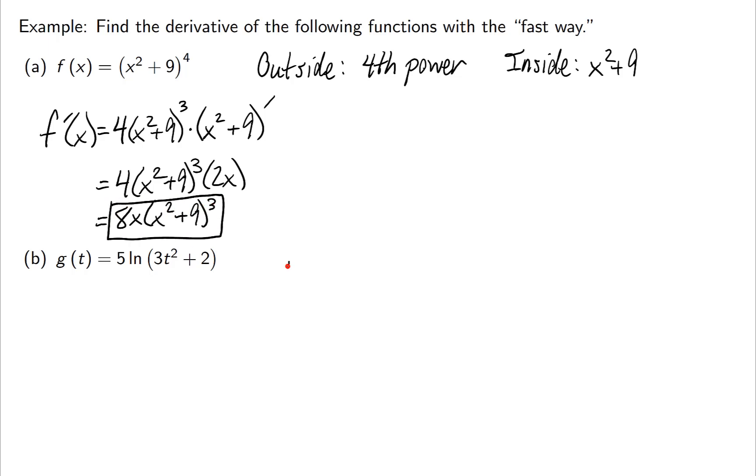Next example. If you think about the outside and you look at the function, you should see that there is just a log here. There's a 5 in front, so I'll let it be part of that. But I'm just going to say the ln thing is on the outside. For the inside, I'm going to say what's inside the parentheses, 3t squared plus 2.